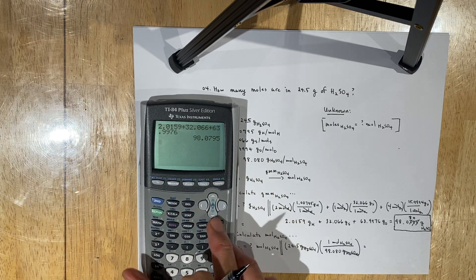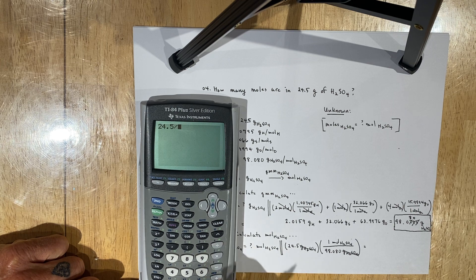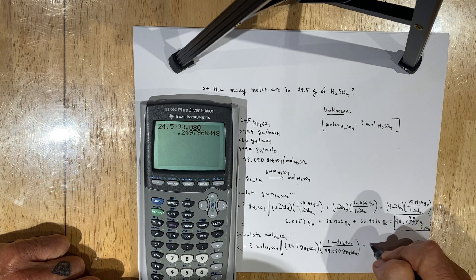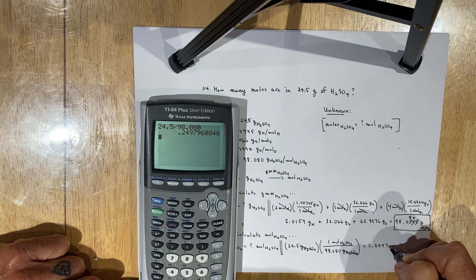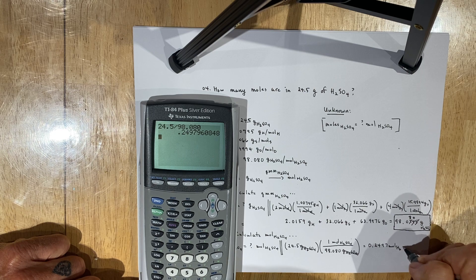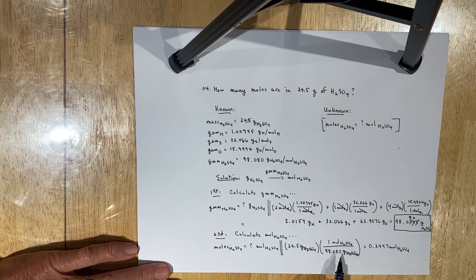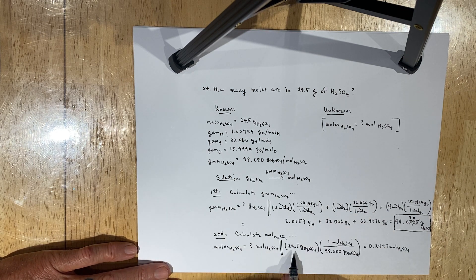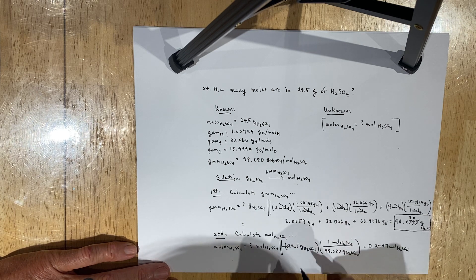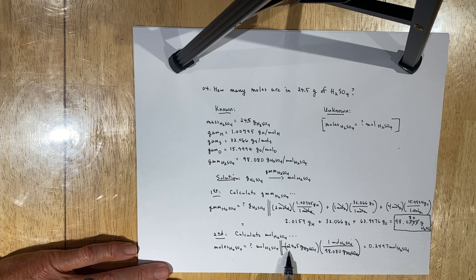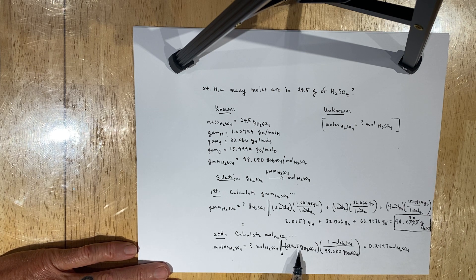When we do the calculation — 24.5 divided by 98.080 — we get a value of 0.2497 moles of H₂SO₄. When you multiply or divide measurements, your answer can have no more significant figures than the measurement with the least. Using the Atlantic-Pacific significant figure technique: the decimal point is present, so you draw an arrow from the Pacific (left) until you reach the first non-zero digit, which is 2. The 2, 4, and 5 are all significant — so 24.5 has three significant figures.